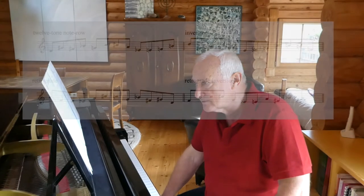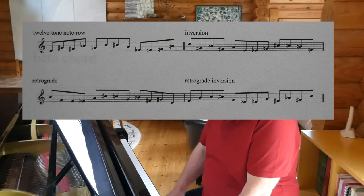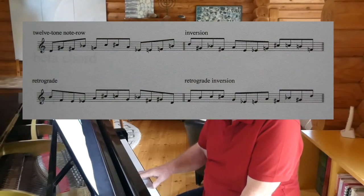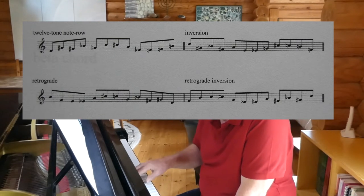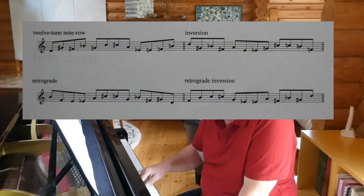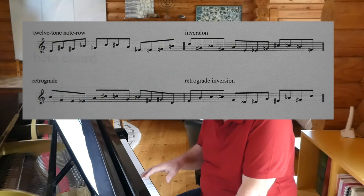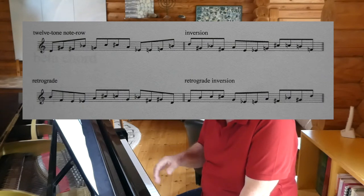So if we say that these elements of atonality and serialism were so important, let's have a closer look at the technique of serial composition and how it works. The first thing you need is a note row, which is all twelve of the semitones in any order you care to put them. This is the order I've chosen for mine. So I have all of the twelve notes there and they don't seem to have any order or logic whatsoever.